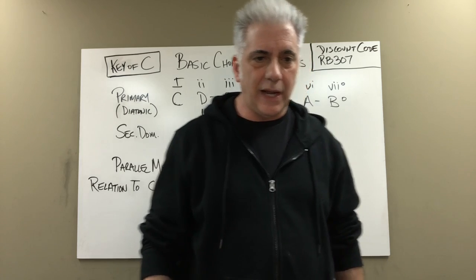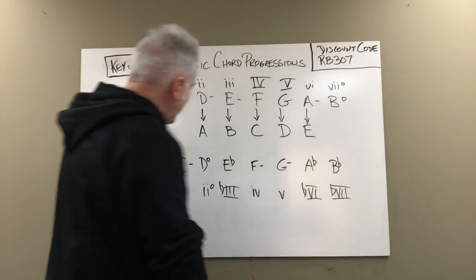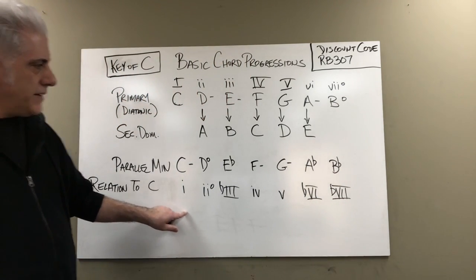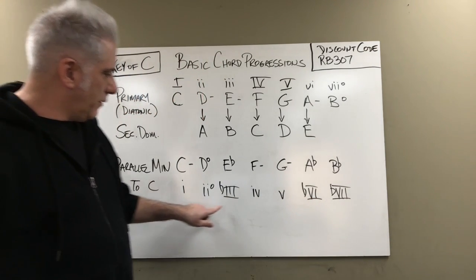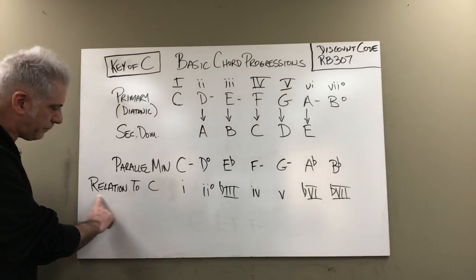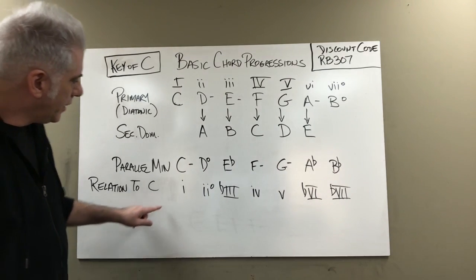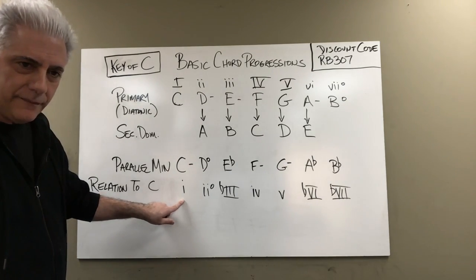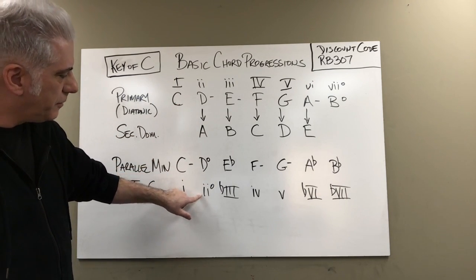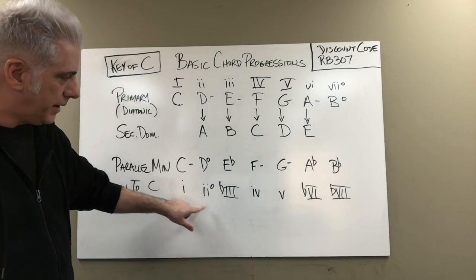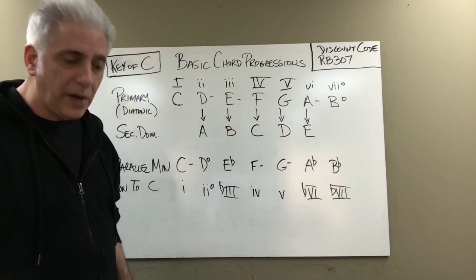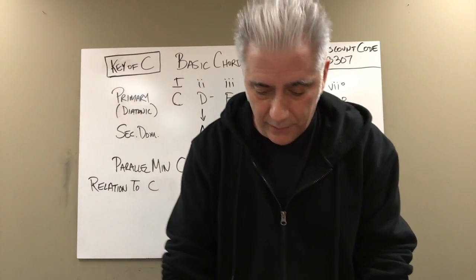The C natural minor scale is: C D E-flat F G A-flat B-flat C. Those are the chords built on that scale. When I write these down in relation to C major, I label them flat-three, flat-six, flat-seven. For example, E-flat major is a flat-three major in the key of C — that being a borrowed chord is something you commonly hear. D diminished would be a two-diminished in C, which is uncommon, but E-flat major — a flat-three borrowed chord — that's definitely something you hear.